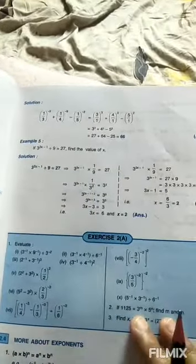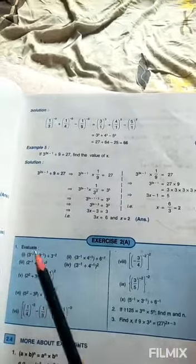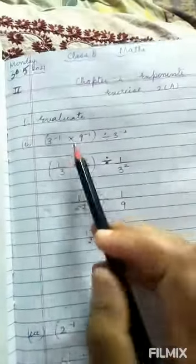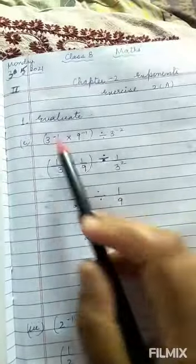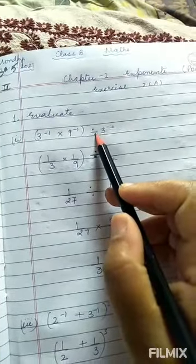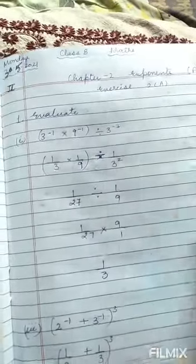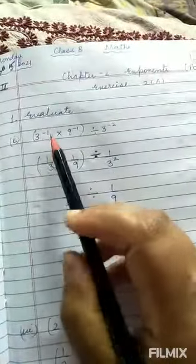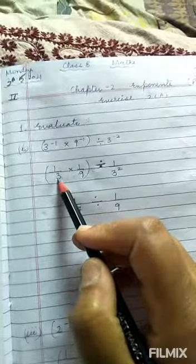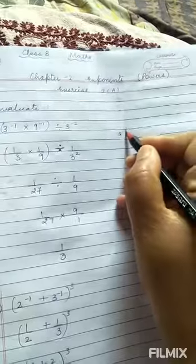Good morning class 8, now let's start exercise 2A children. I am doing question number 1, evaluate part 1. Please see 3 to the power minus 1 into 9 to the power minus 1, in bracket, divided by 3 to the power minus 2. Now this can be written as 1 upon 3. You know why? Remember a to the power minus n is equal to 1 upon a to the power n.